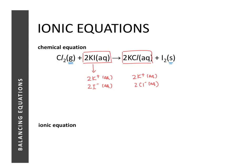Now we cancel out the ions appearing on both sides — the spectator ions. In this case, the spectator ion is the potassium ion. Once cancelled, the ionic equation is simply: Cl₂ (gas) + 2I⁻ (aqueous) → 2Cl⁻ (aqueous) + I₂ (solid).